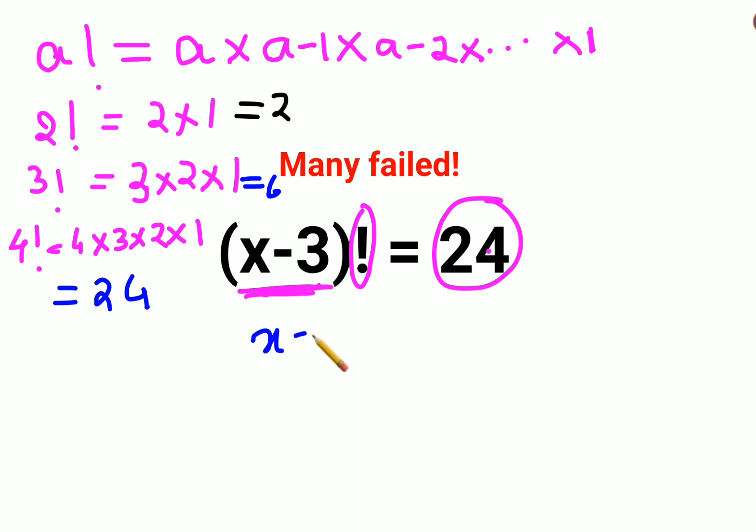So now I can write (x minus 3) factorial equals 4 factorial. Since on both sides there is a factorial sign, we can cancel them. Now I can directly say that x minus 3 equals 4.